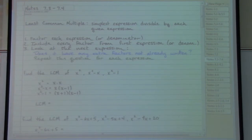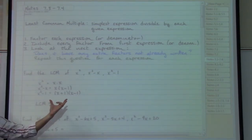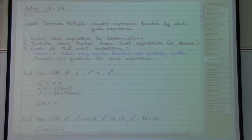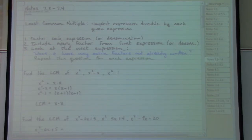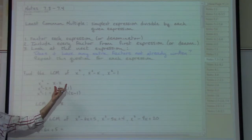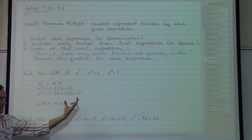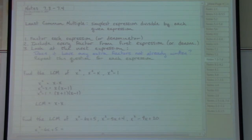Now step two says we want to include every factor from the very first expression or the first denominator. Which means that when we start writing out our least common denominator, we're going to start with just those factors from the first expression. Now we move on to step three, asking the same question for each of the remaining expressions: do we have any extra factors that we haven't written down yet? We look at the second expression — we've got an x and an x minus one. We already wrote down an x, but we do not have an x minus one included yet, so we're going to include the x minus one.